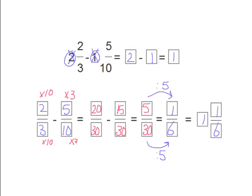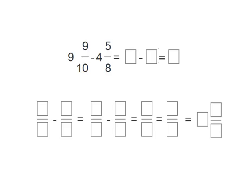Okay, good job. Let's try another problem. We have 9 and 9 tenths minus 4 and 5 eighths. Let's subtract the whole numbers first. 9 minus 4 is 5.